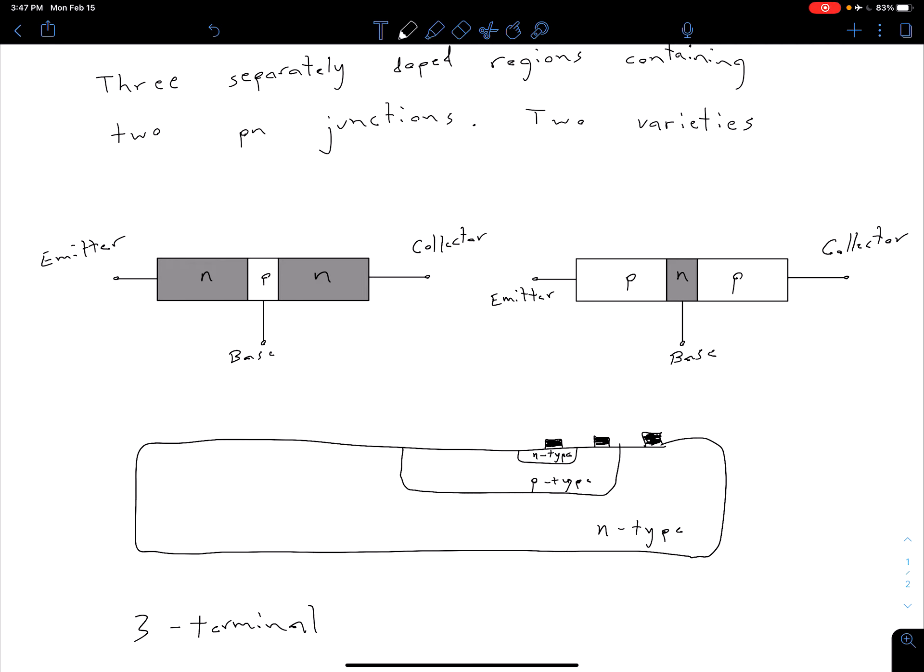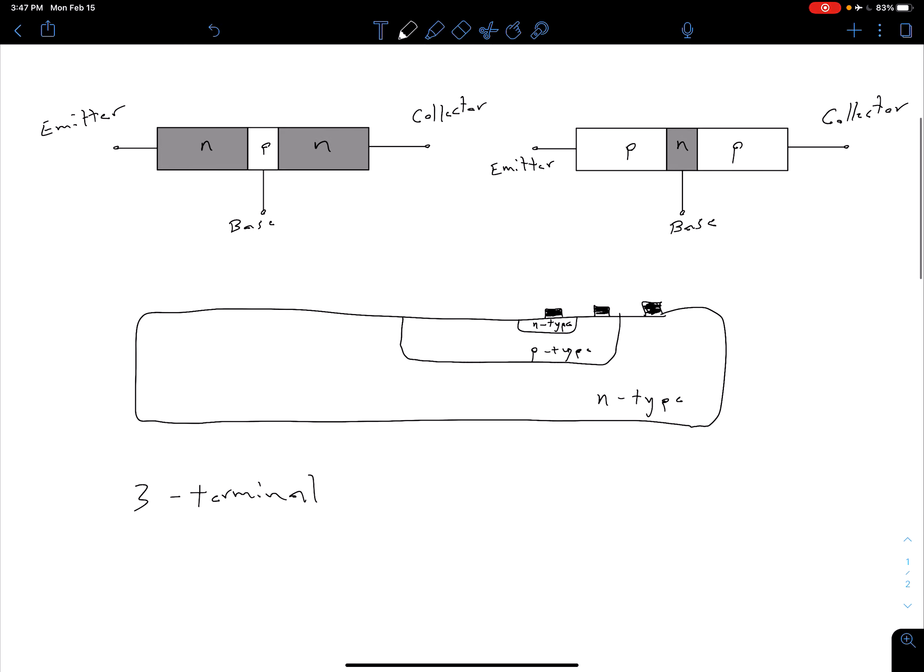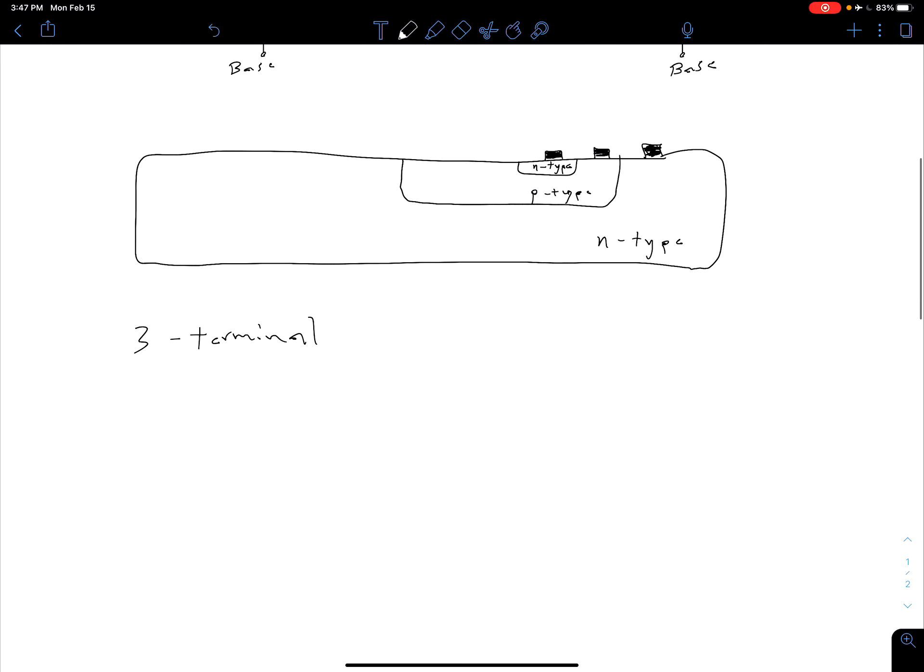A couple other things to note in terms of the realistic structure is that this base region, the region sandwiched in between the two others, is very small. How small? It's on the order of tens to hundreds of nanometers. Lattice distances for our silicon crystal are on the order of a tenth of a nanometer, so we're talking extremely small distances for our base width. We'll come back to why that's important as we talk about the semiconductor physics and device operation.